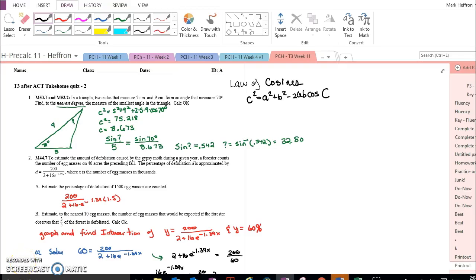So the first step for anything like this is to draw a picture, and it says that 70 degrees is between the sides of 9 and 5. So that helps us with that picture.